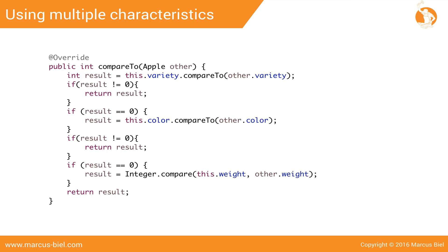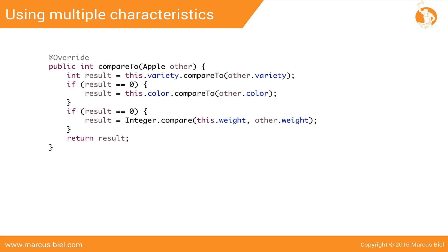Now look at the code we implemented. Are you happy with it? It contains duplicate code — and duplicate code is evil, so let's clean that up. These two code blocks are executed only if the result is zero. That means if the result is not zero, both blocks will be skipped. Therefore, we can simply remove the two redundant code blocks. This, by the way, is a good example of what you do as a clean coder. Usually you don't instantly write clean code — you start with a rough idea, make it work, and then continuously improve it until you can feel that it's clean.